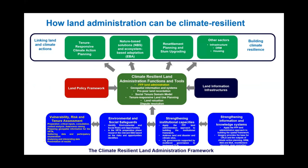We're talking about fit-for-purpose land administration, but also geospatial information systems, pro-poor land recordation, tools such as the social tenured domain model, and many similar ones. As Eugene talked about in the last presentation, how we can apply tenure-responsive land use planning, land valuation, and dispute resolution — a lot of tools that the surveying community have to bring to bear if we are clear about the climate challenges that are faced.